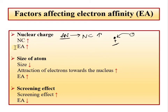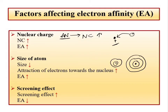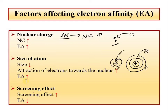The second factor is the size of the atom. As you know, where the size is smaller, electron addition is easier because the electron being added is closer to the nucleus. But where the size is large, the electron being added is far from the nucleus. So as the size decreases, the attraction of the electron towards the nucleus increases and electron affinity increases.